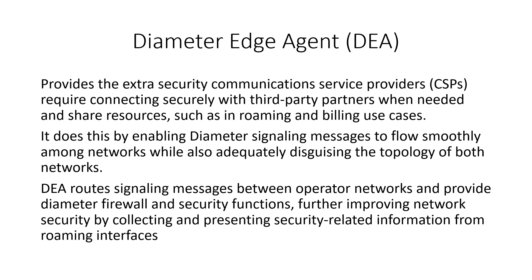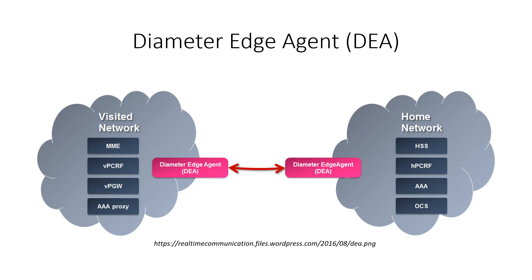A diameter edge agent provides the extra security communication service providers require to connect securely with third-party partners when sharing resources such as roaming and billing use cases. It enables diameter signaling messages to flow smoothly among networks while adequately distinguishing the technologies of both networks. Diameter edge agents route signaling messages between operator networks and provide diameter firewall and security functions, further improving network security by collecting and presenting security-related information from roaming interfaces. This is illustrated by a diagram of a network using diameter edge agents between a home network and a visiting network.